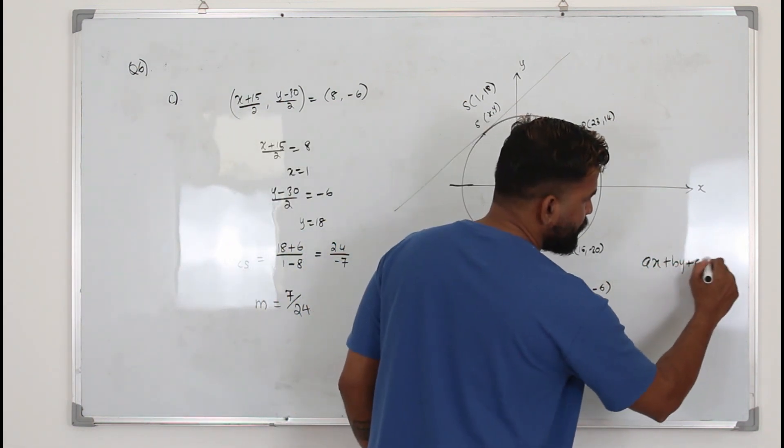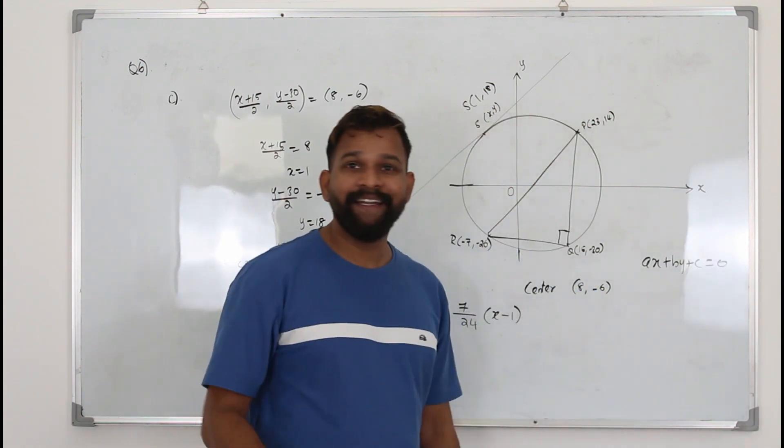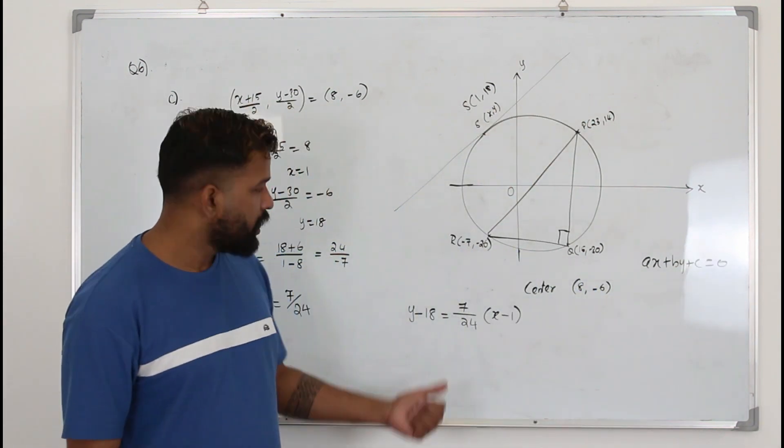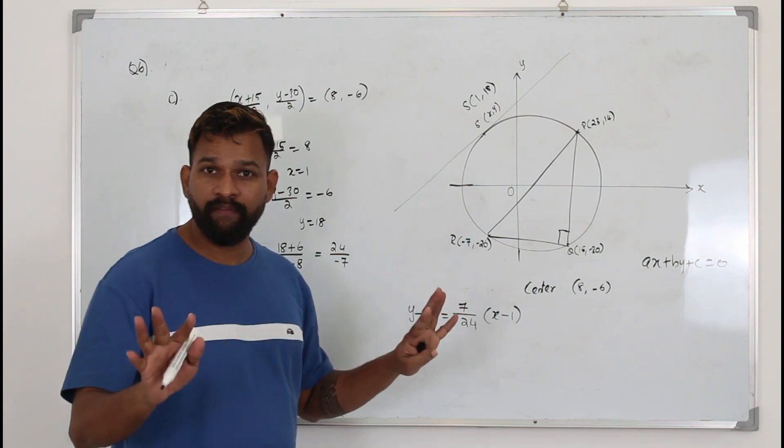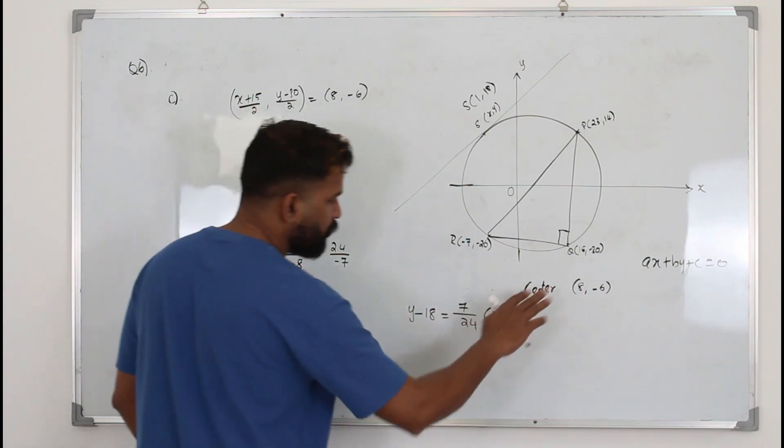ax plus by plus c is 0 where a, b, c are integers. What do they mean by that? You have to get rid of this fraction. You are not supposed to have any fraction here. So multiply it throughout by 24.